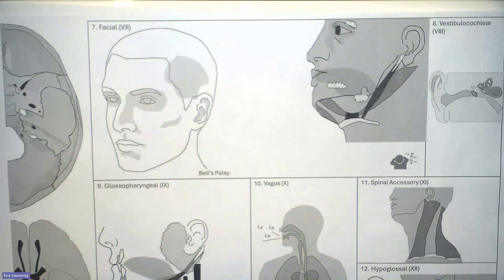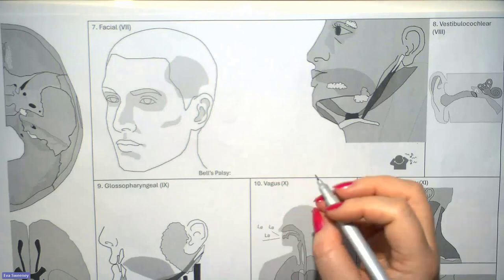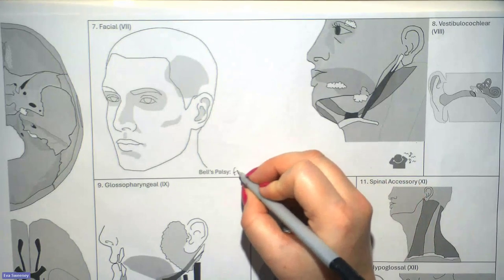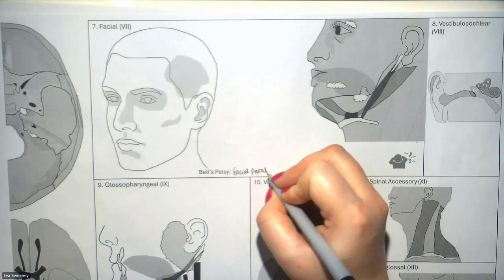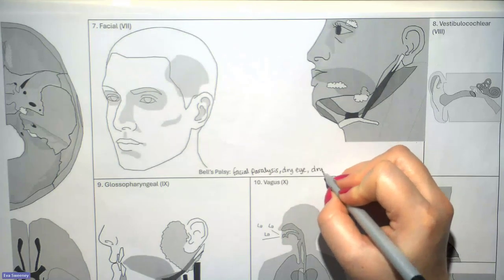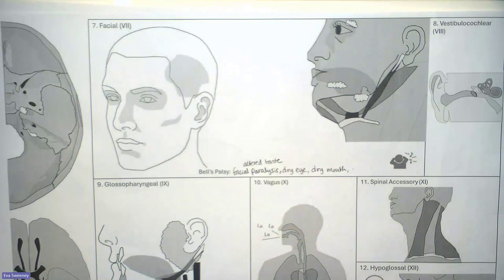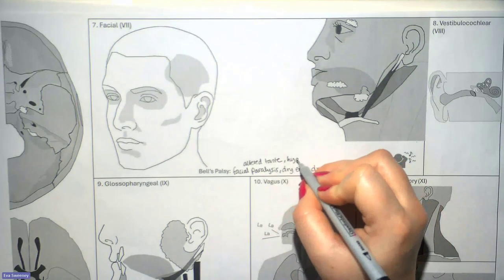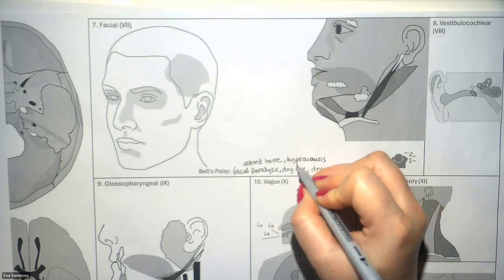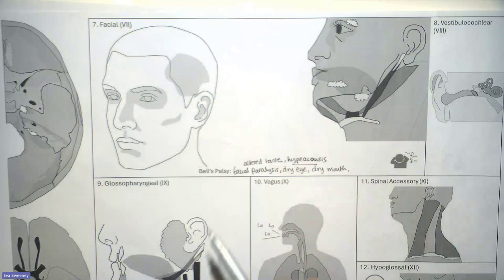Now we move on to the facial nerve. What the facial nerve is most known for is moving your face. When thinking about its actions, it's easiest to think of someone with Bell's palsy. Someone with Bell's palsy has facial paralysis, a dry eye, may need to tape their eye shut at night, might have a dry mouth, altered taste, and sometimes hyperacusis — a sensitivity to noise. These symptoms help us figure out the functions of the facial nerve.